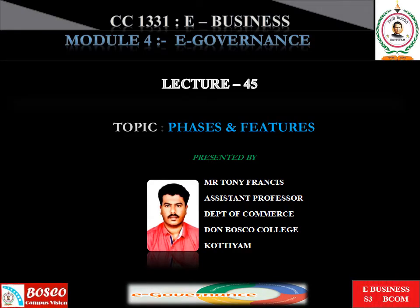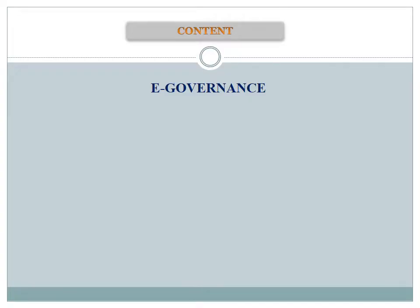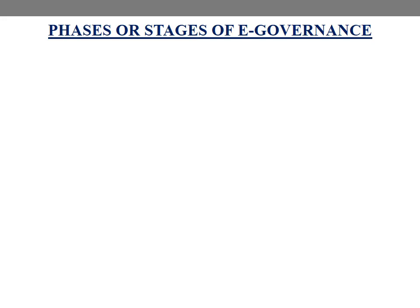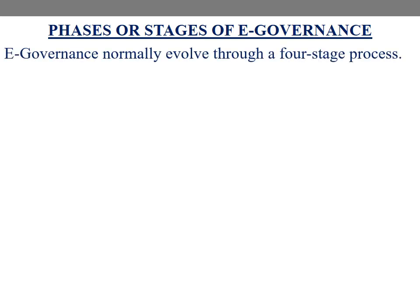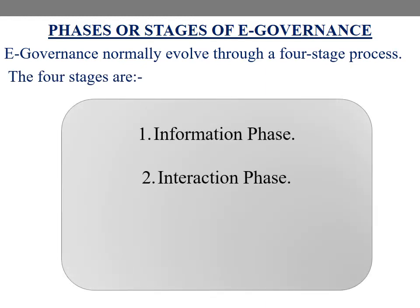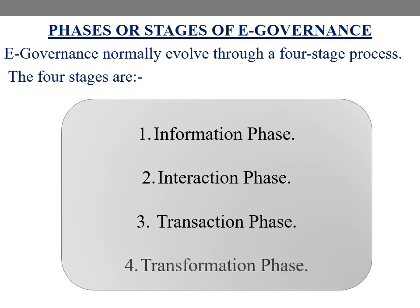Hello students, welcome back to Bosco Campus Vision. In the previous session we discussed the meaning, definition and objectives of e-governance. In this session we will look into the main phases and features of e-governance. E-governance normally evolved through a four-stage process. The four stages are: information phase, interaction phase, transaction phase, and transformation phase.